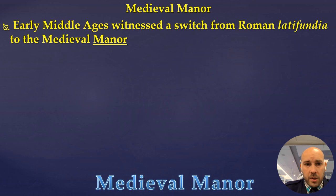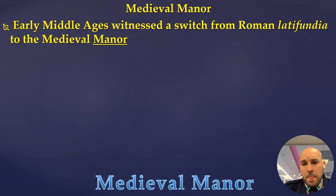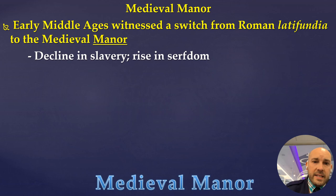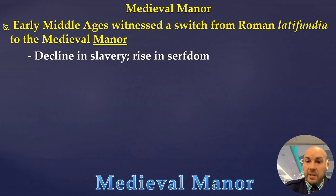We're going to talk a little bit about economics in the time period. The early Middle Ages are going to witness a switch from the system the Romans had set up in Western Europe — the Roman Latifundia — to what's called the medieval manor. The big change driving this is the decline in slavery. With the constant invasions of the Vikings, Magyars, and Muslims, everybody really has to work together, and we see a movement in Western Europe away from slavery into the rise of what's called serfdom.